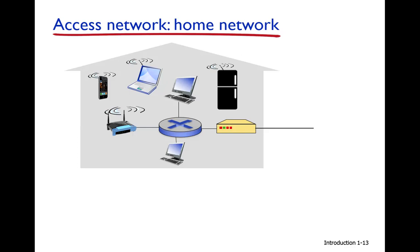Another type is the home network. Within a home, the internet connection is shared by multiple users — for example, via mobile, laptop, desktop, or even a refrigerator connected to the internet. A router is used to attach both wired and wireless devices, and a wireless access point connects wireless nodes.